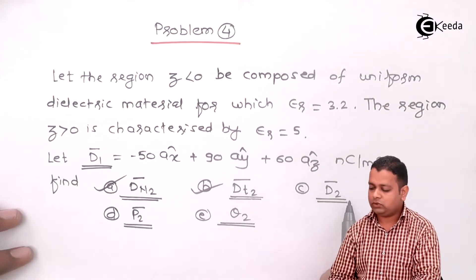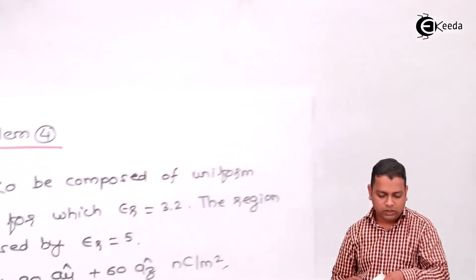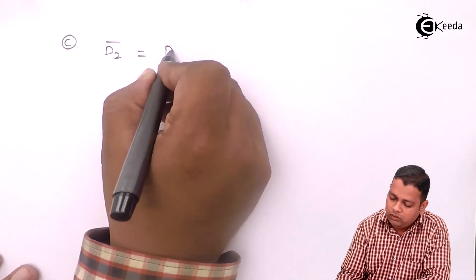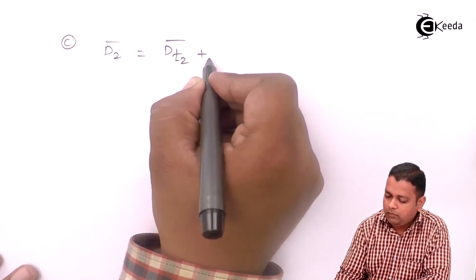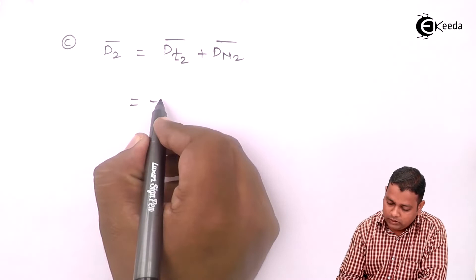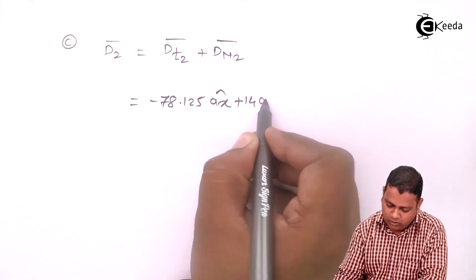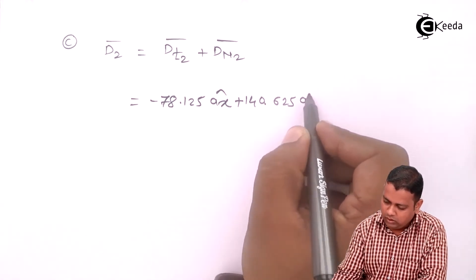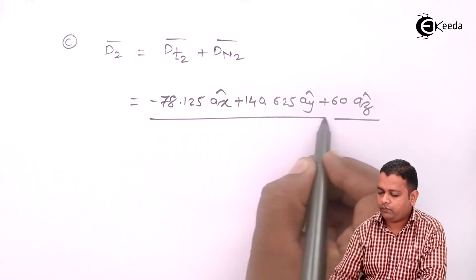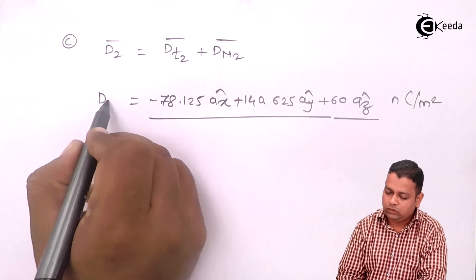Now we require d2 bar, which can be obtained by simple addition of dt2 bar and dn2 bar. So d2 bar equals minus 78.125 Ax cap plus 140.625 Ay cap plus 60 Az cap nanocoulombs per meter square. This is the answer for part C.